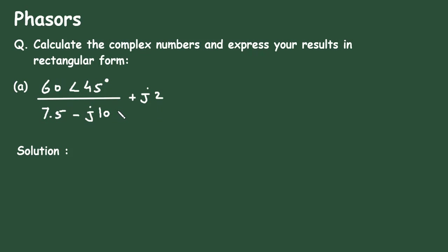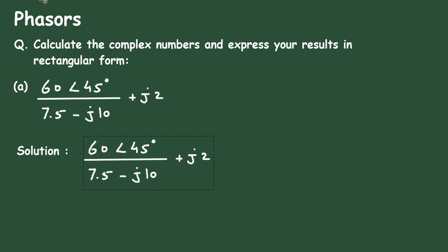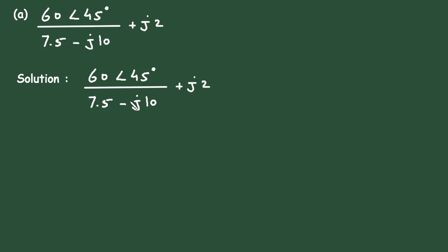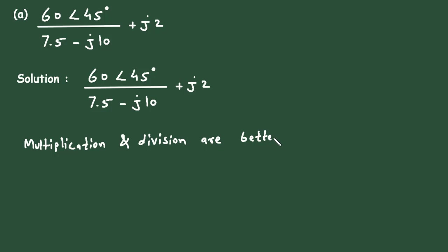Here is the complex number we have to simplify and convert into rectangular form. First, we will write what is given. We can see we have to divide, and we know that multiplication and division are better performed in polar form. The numerator is already in polar form, but the denominator is in rectangular form.